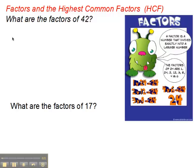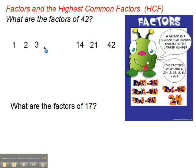Well, 1 always divides into a number. So 1 factor here is 1, and it goes 42 times, so we call that a factor pair — 1 and 42 are a factor pair. 2 divides into 42, 21 times, so 2 and 21 is another factor pair. 3 divides into 42 — 42 divided by 3 is 14 — so 3 and 14 are a factor pair.